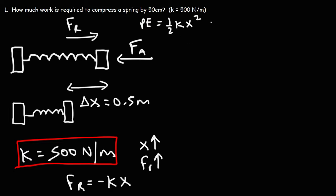So we could use this formula to get the answer. The work required to compress the spring is one-half kx squared. For those of you who want to use calculus to get the same answer, or the same formula, here's what you can do.